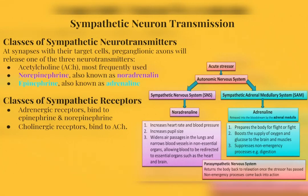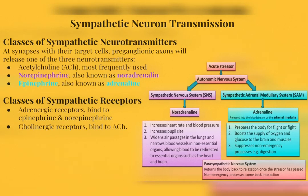Neurons communicate through chemicals called neurotransmitters, which interact with target cells by binding to a protein-based receptor embedded in the plasma membrane. Neurotransmitters are released by the preganglionic axon at the synapse. Acetylcholine is the most frequently used transmitter within the sympathetic division of the ANS. Epinephrine and norepinephrine are other classes of neurotransmitters used, with adrenergic receptors named for their ability to bind to adrenaline and noradrenaline, and cholinergic receptors binding to acetylcholine.